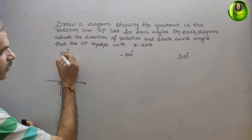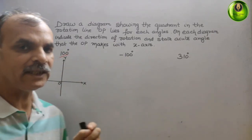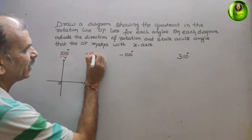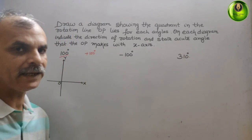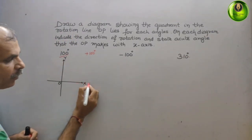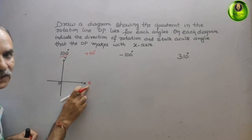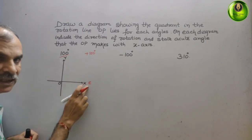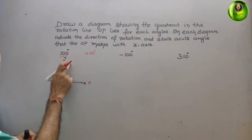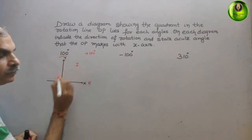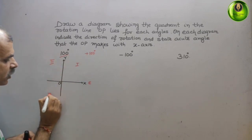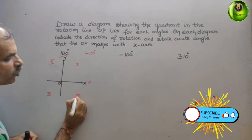Now if you see here, 100 degrees means it is a positive angle — positive 100 degrees. So positive means we start from the east direction, which is the positive X-axis, and move anti-clockwise. This is your first quadrant, this is your second quadrant, this comes your third quadrant, and this comes your fourth quadrant.